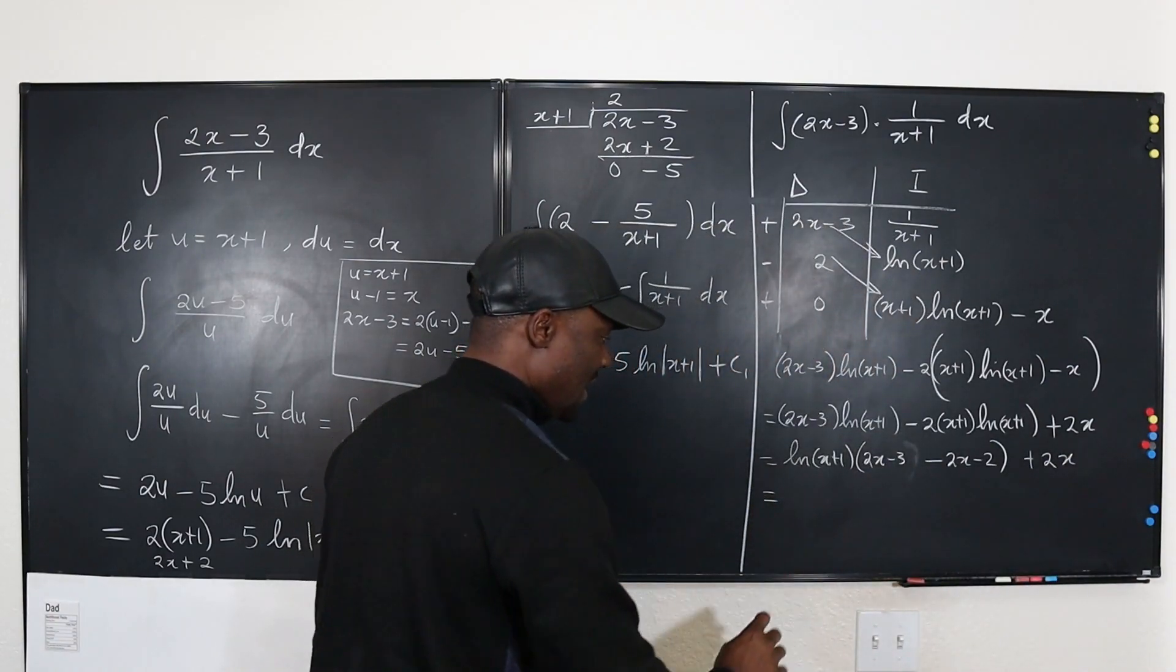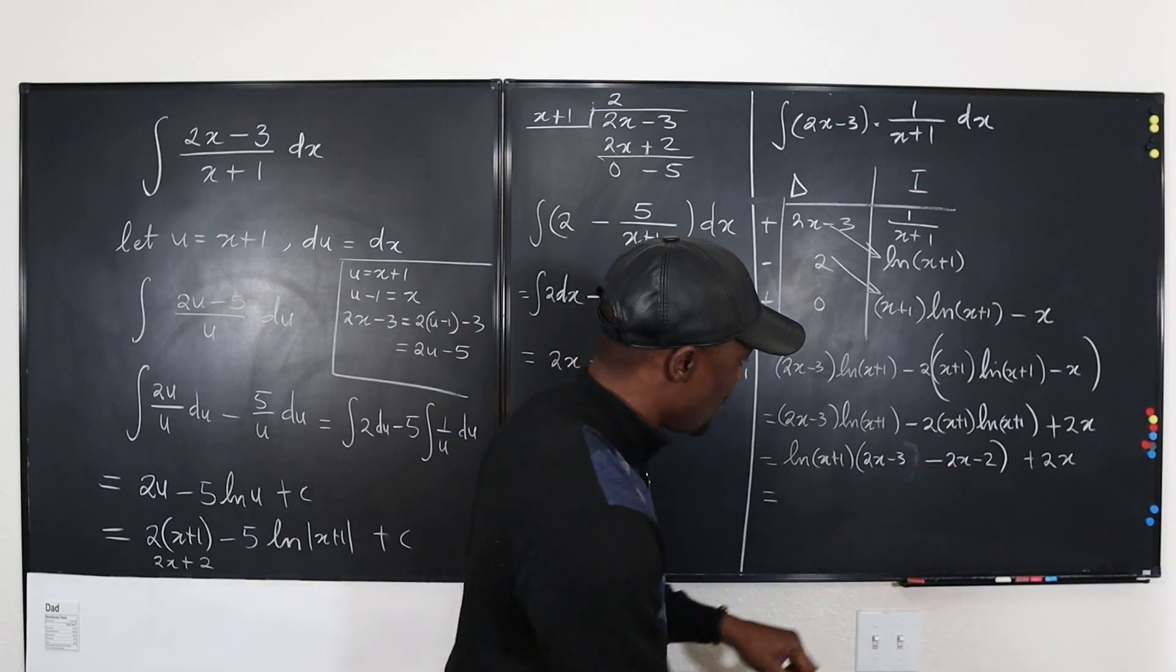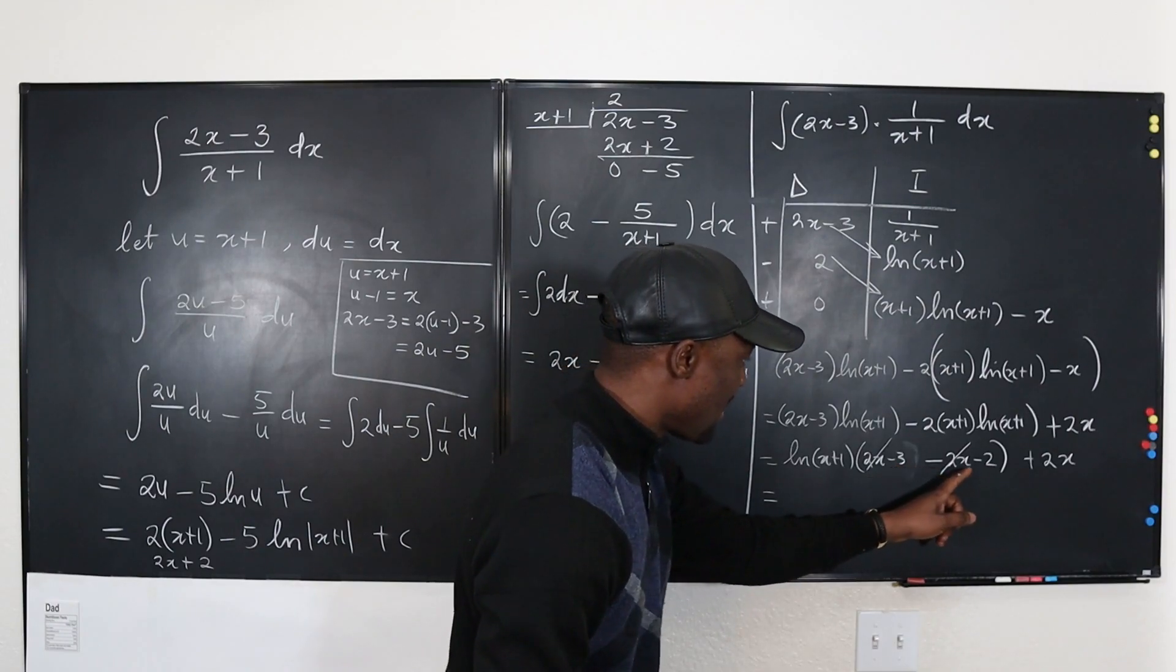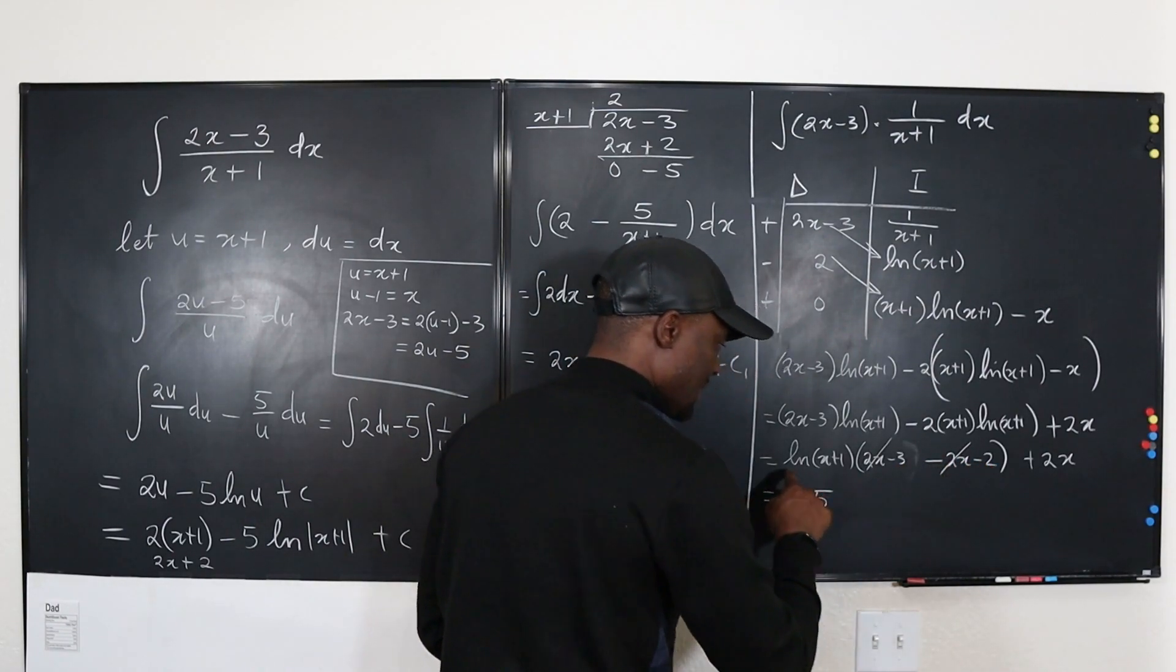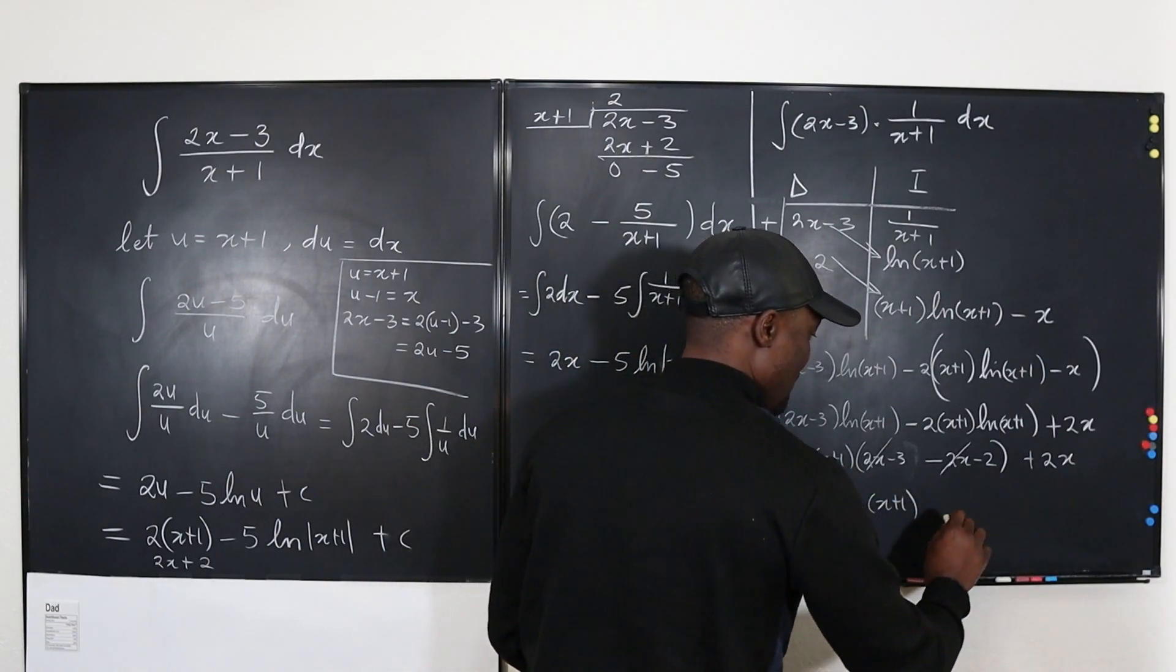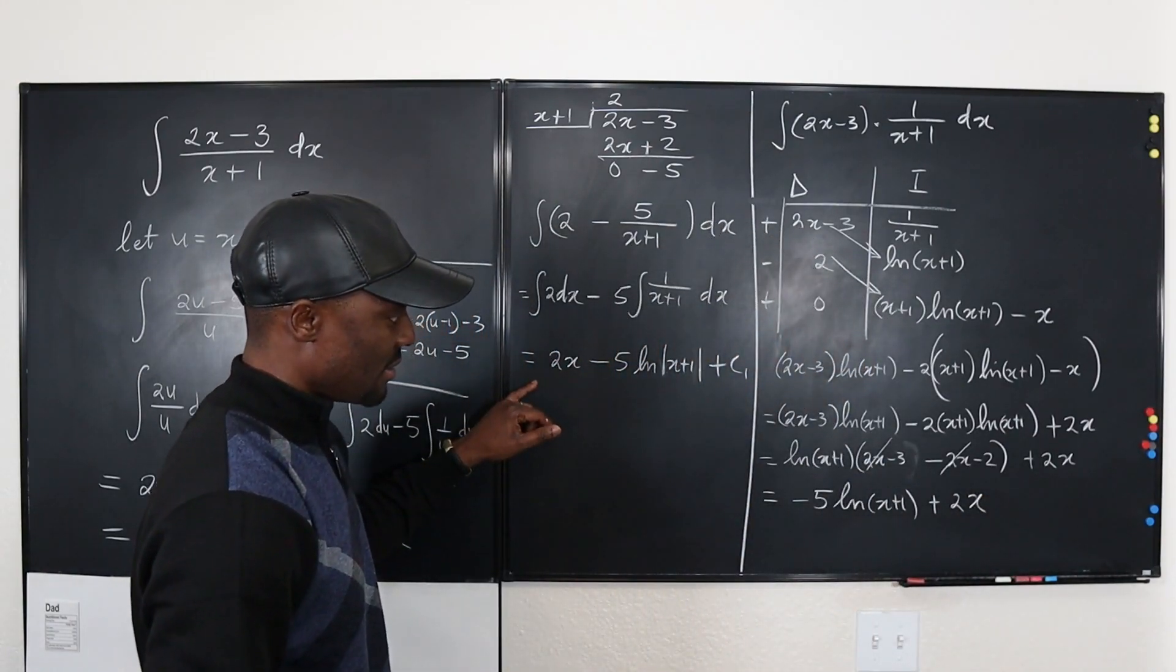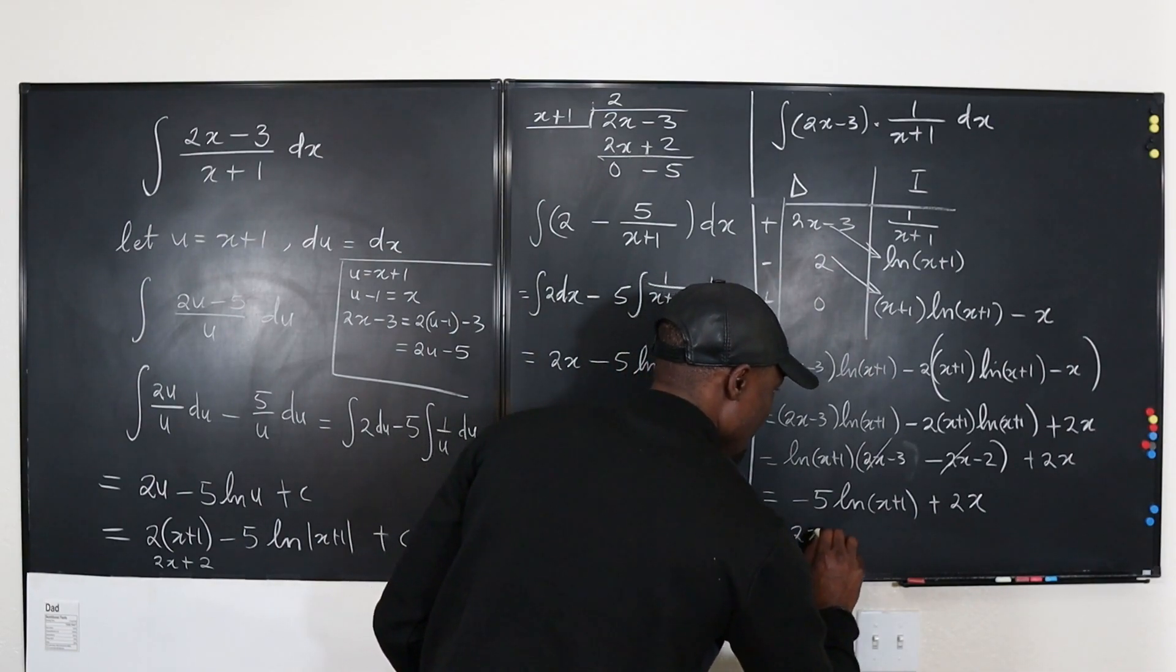Let's clean up. 2X minus 2X, we'll take this out. Now what I have left is minus 5, that's minus 3 minus 2, that's minus 5 times this, natural log of X plus 1, plus 2X. Does that look like this? Yeah, it's the same answer. So it's going to be 2X.